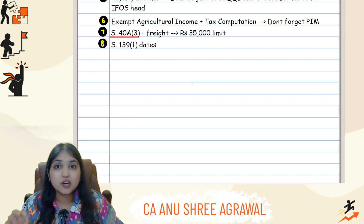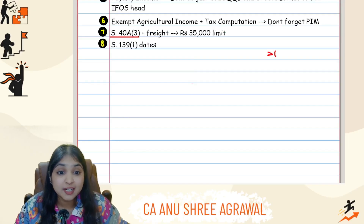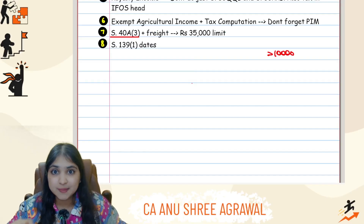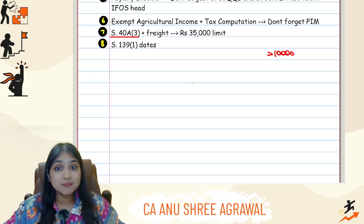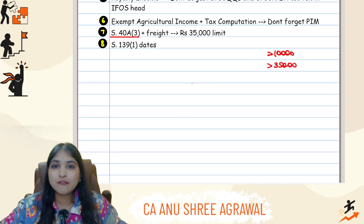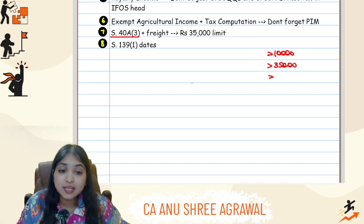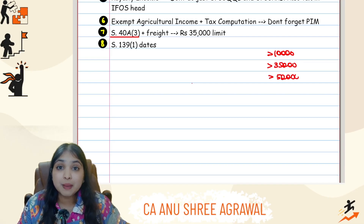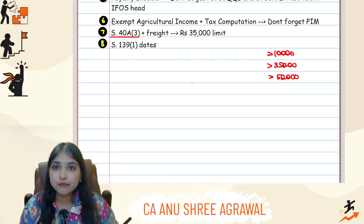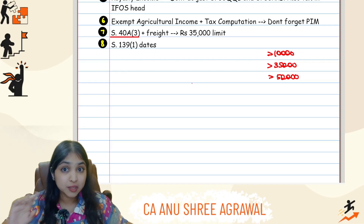In PGBP computation, we have Section 40A(3). It says if you're incurring an expense and the payment is more than ₹10,000, you have to make the payment in specified mode. However, if the expense is transportation or freight expense and it's more than ₹35,000, then you have to make the payment in specified mode. And if it is a retirement benefit, the limit is ₹50,000. Three limits in Section 40A(3) — keep this in mind.